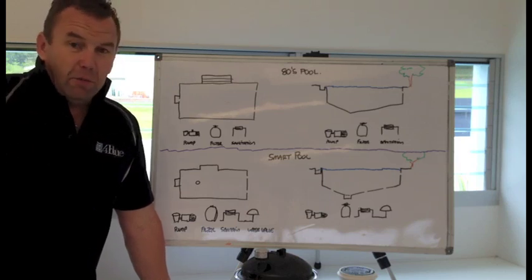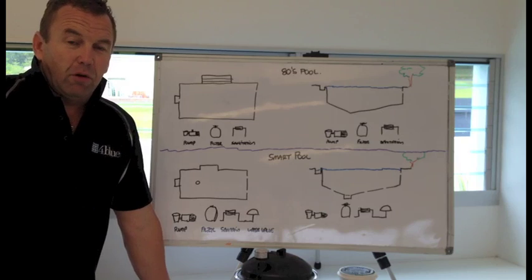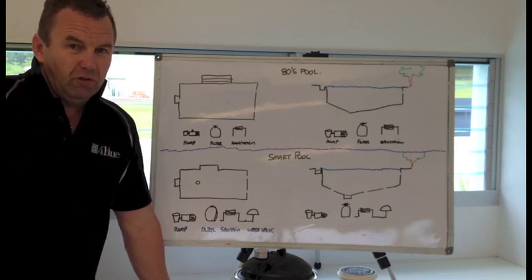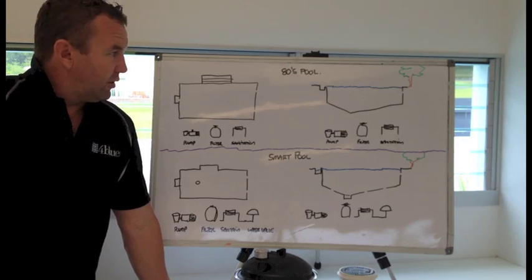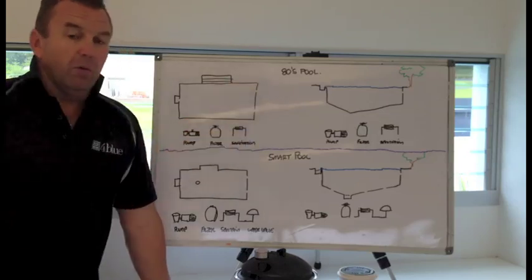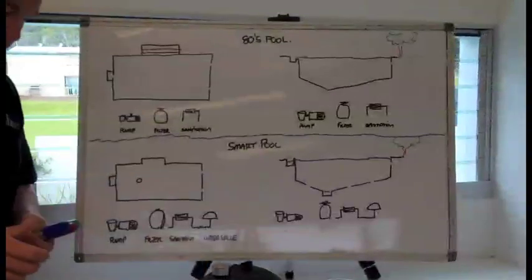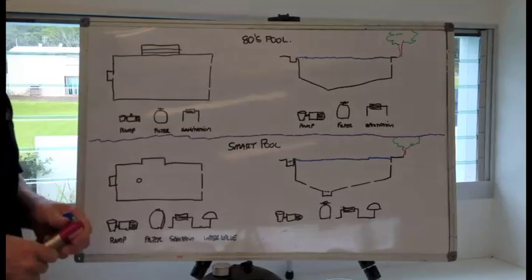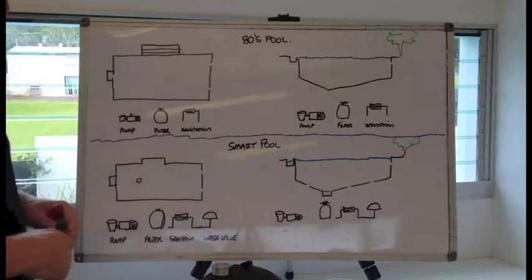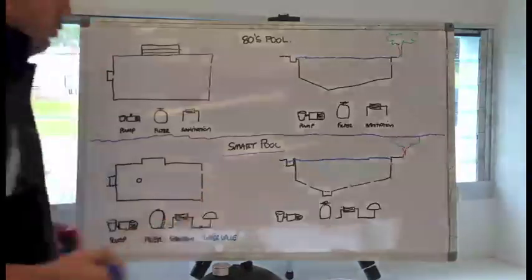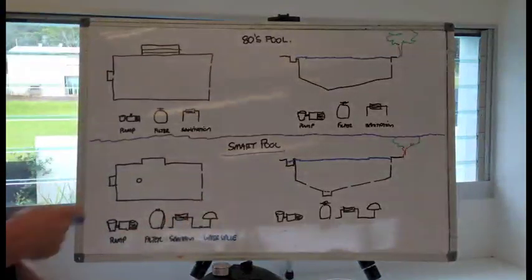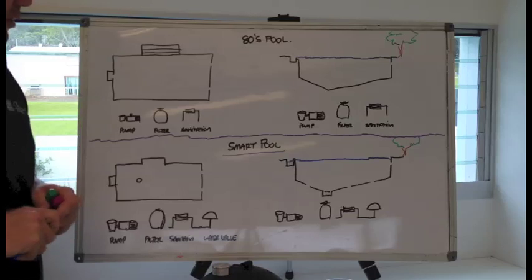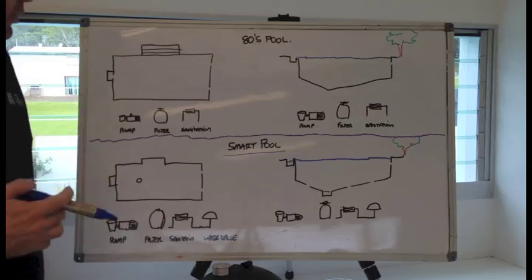Although obviously we're famous for our designer swimming pools, what often gets overlooked is how we actually build them and I think it's important for consumers to understand what the differences are between the way that we used to build swimming pools and the way that we do now. What we've got along the top here is an illustration of the way that we used to build swimming pools and at the bottom we've got the illustration of how we build our Smart Pools. Basically, what I'm going to do here is I'm going to fill in the diagram in terms of where the water flows and where it goes.